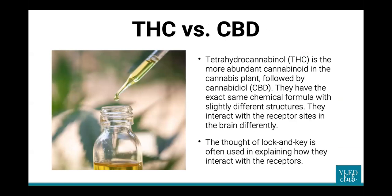THC is the more abundant cannabinoid in a cannabis plant, followed by cannabidiol, which is your CBD. They have the exact same chemical formula with slightly different structures, and they interact with the receptor sites in the brain very differently.